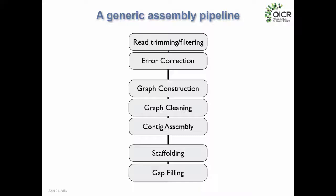Now I'll describe a generic assembly pipeline. We work with real biological data that has sequencing errors and other issues that need cleanup before assembly. A typical pipeline starts with trimming and filtering reads to remove bad data, then performs error correction, constructs the assembly graph, cleans it up, assembles contigs, scaffolds them together, and finally fills in gaps of repetitive sequence. I'll talk about each of these stages individually.